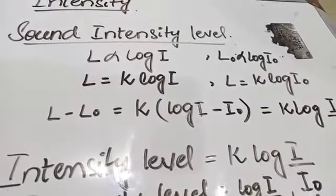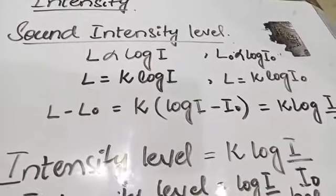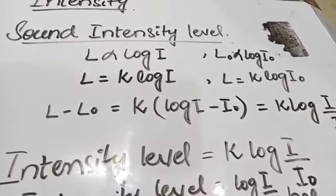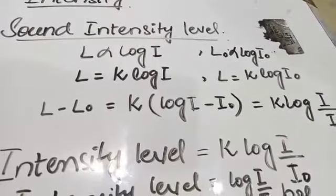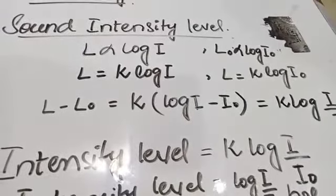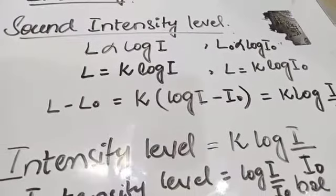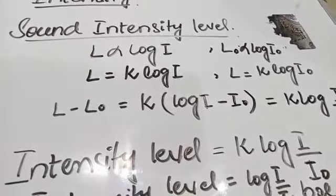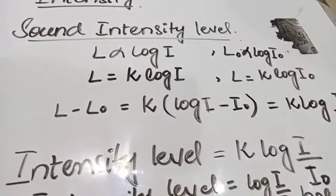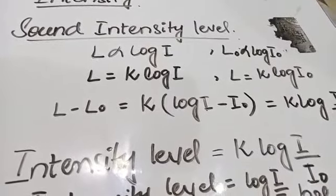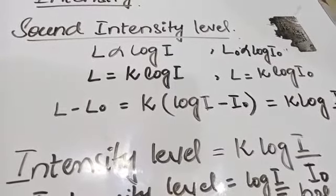Intensity is a physical quantity and we can measure it accurately. The unit of intensity of sound is watt per square meter. Now we will derive the relation for sound intensity level.